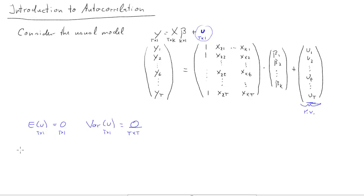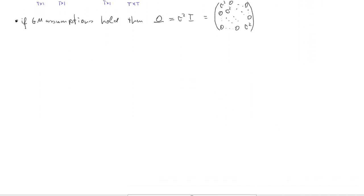Now it's the structure of this omega that will drive a lot of the issues that arise. First recall that if the Gauss-Markov assumption holds, then this omega can be decomposed into sigma squared times the identity matrix. That means omega looks like this, just with sigmas on the diagonal, zeros everywhere else.